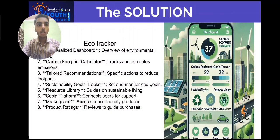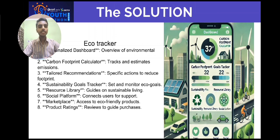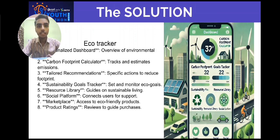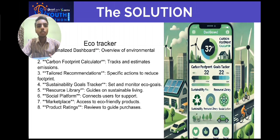The one-stop solution for all those problems is EcoTracker. EcoTracker is a personalized application where a user can calculate its carbon footprints while driving any car, truck, or any vehicle. It would calculate the carbon footprints according to the vehicle he is driving — for a truck it would be different, and for a car it would be different. It would also give some tailored recommendations that are specific actions to reduce the footprints emitted by him.